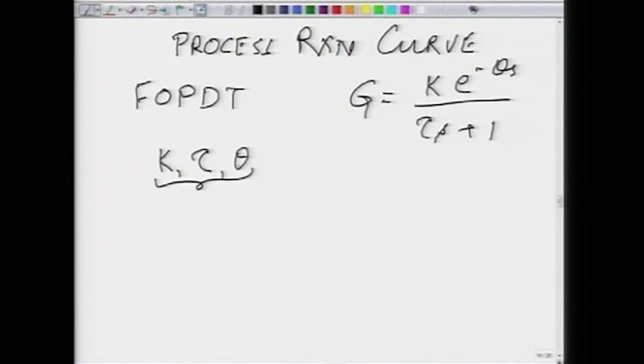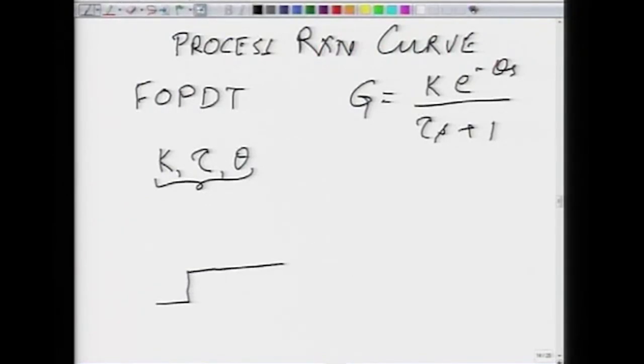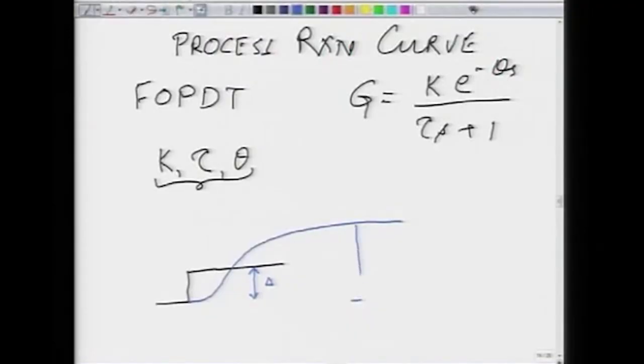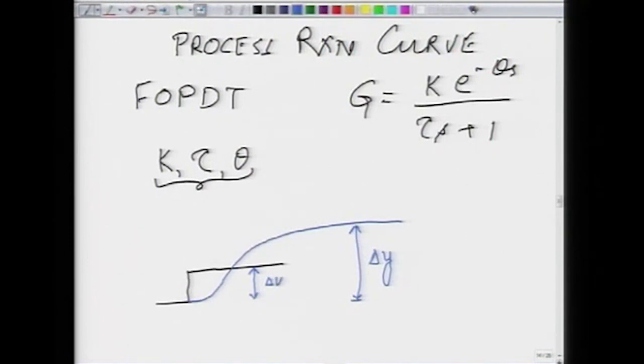These are parameters we want to estimate. One of the ways of doing it is the process reaction curve method. What we do is give a step change of a certain magnitude — for example, a 5 percent change in the position of a valve — and in response the process output responds like an S-shaped curve, settling to a final steady state value. If the change in output is delta y and the change in input is delta u, then the gain is delta y divided by delta u.